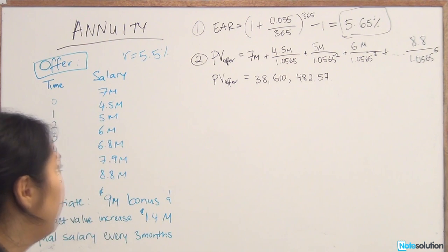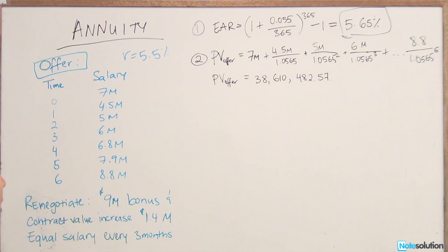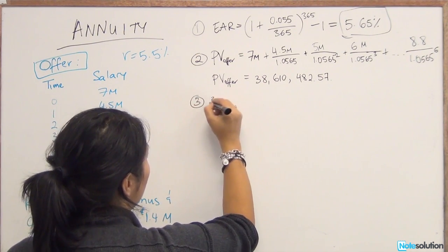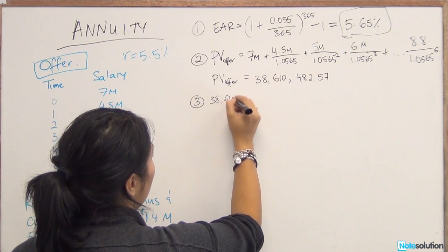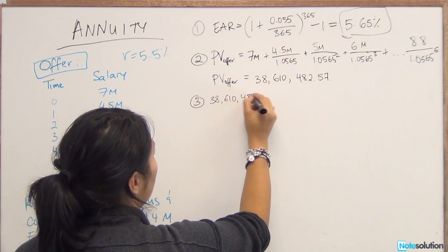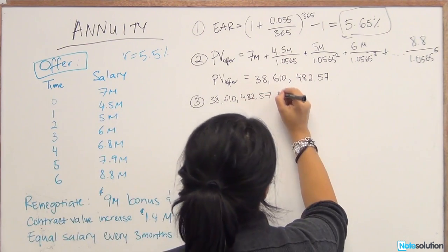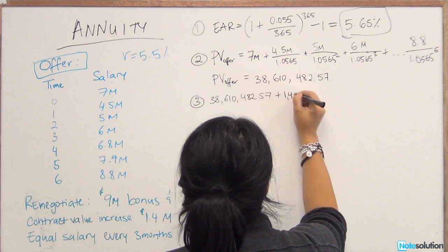So that's the present value of the offer that the guy got. And that's going to be a key step in proceeding to calculate the quarterly payment. So now next step is we know that this is the present value of the offer, but he wants it to be increased by $1.4 million. So step three is we're going to take the present value now and add on $1.4 million to really calculate how much this guy wants to get paid.